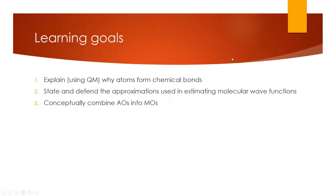The learning goals for this first section are to explain, using quantum mechanics, why it's energetically beneficial for atoms to form bonds and what kind of bonds they form. We're going to look at some approximations used to estimate molecular wave functions, and the chief one is the Born-Oppenheimer approximation — you'll want to be able to understand that and defend its use.